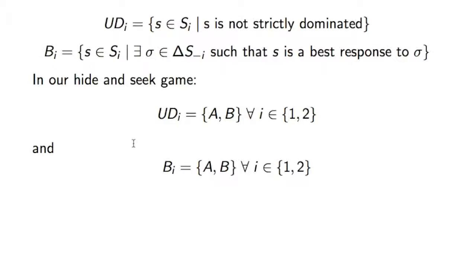And in this game, we again have that B_i is {A, B}, because A is a best response to B, and B is a best response to A. So in this particular occasion, B_i is equal to UD_i.